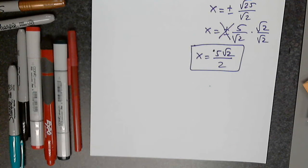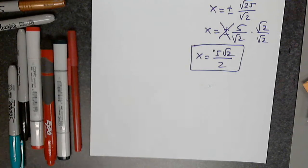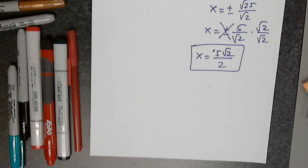So x equals 5 times the square root of 2, divided by 2. I also give you the fact that this is an evening class and you're probably coming from one job or maybe two jobs — I know it's not easy.